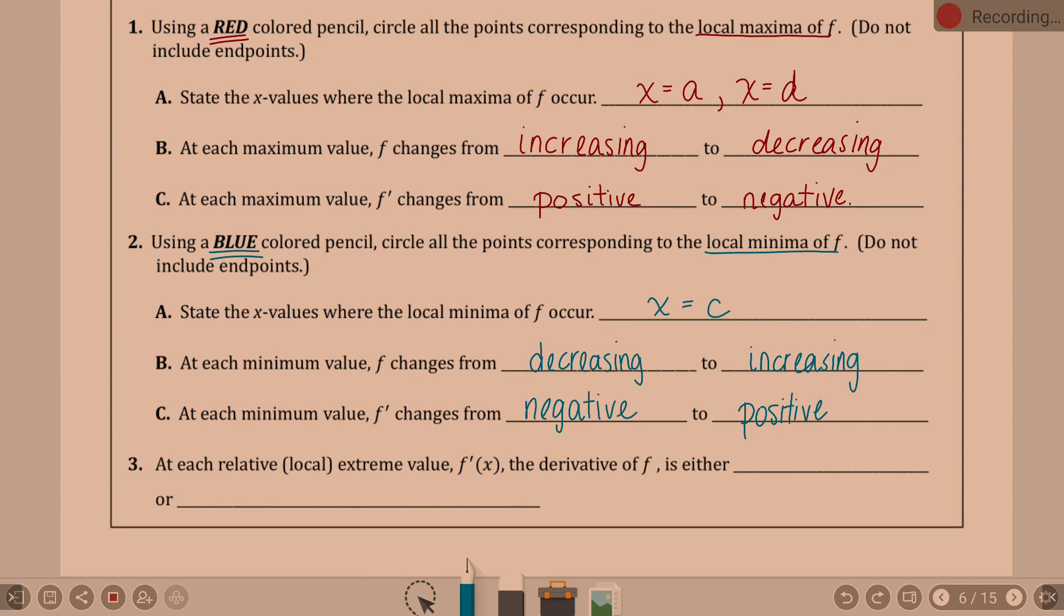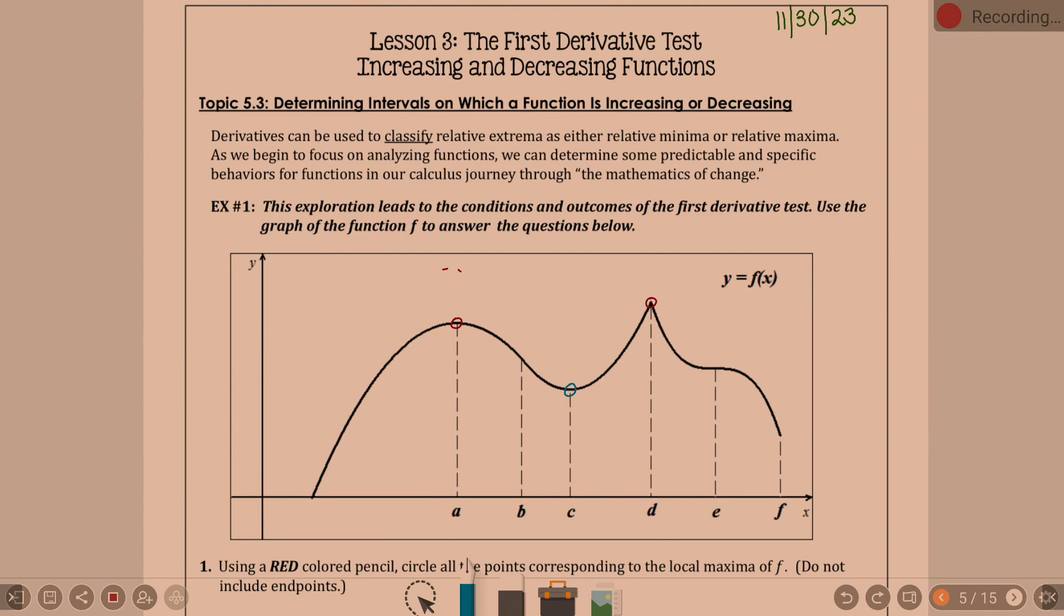At each relative local extreme value, f prime, the derivative of f, is either blank or blank. So at the actual mins and maxs, I put zero but I didn't know constant was the right word. Zero, because right here the derivative—well, a derivative value like a slope value is always a constant. But at a min or a max, your derivative is zero or what's this catch here?